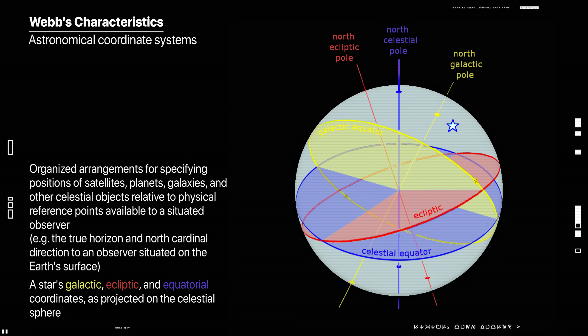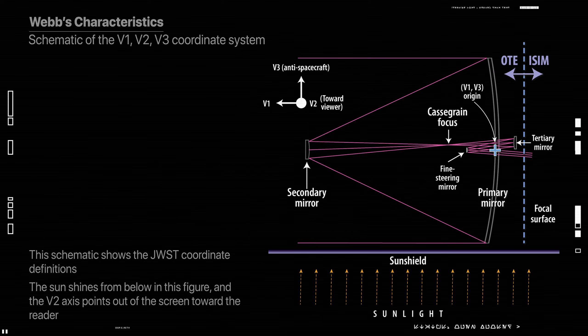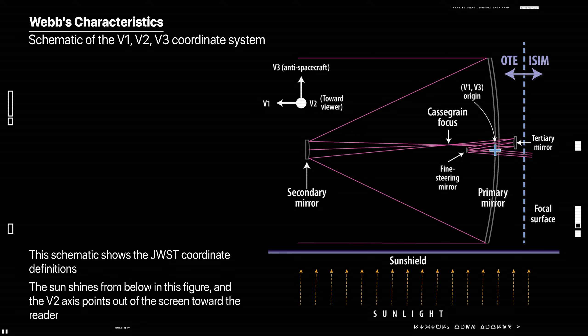The observatory V axes are defined with respect to the telescope. V1 is the bore side of the telescope, V3 points away from the sun shield, and V2 is orthogonal to both of these, forming the thumb of a right-handed coordinate system. The V2 axis is pointing towards you or out of the screen.